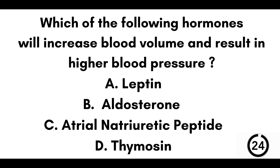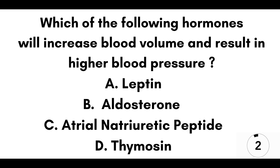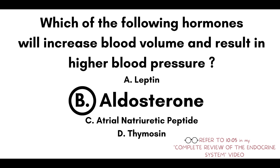Question number seven: which of the following hormones will increase blood volume and result in higher blood pressure? A) Leptin. B) Aldosterone. C) Atrial natriuretic peptides. Or D) Thymocin. Our answer here is B, aldosterone.